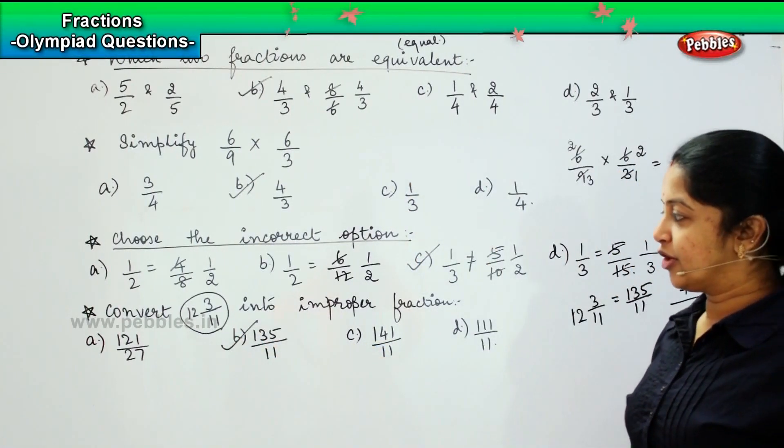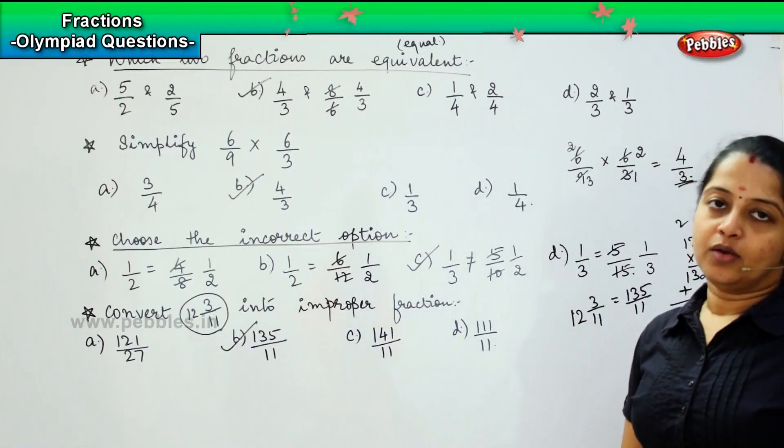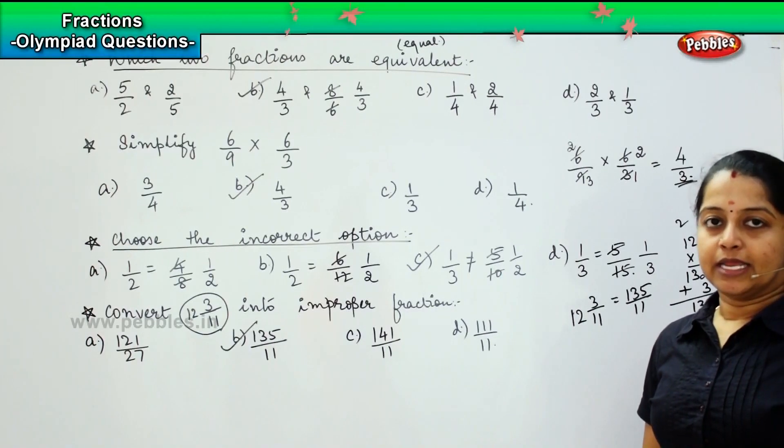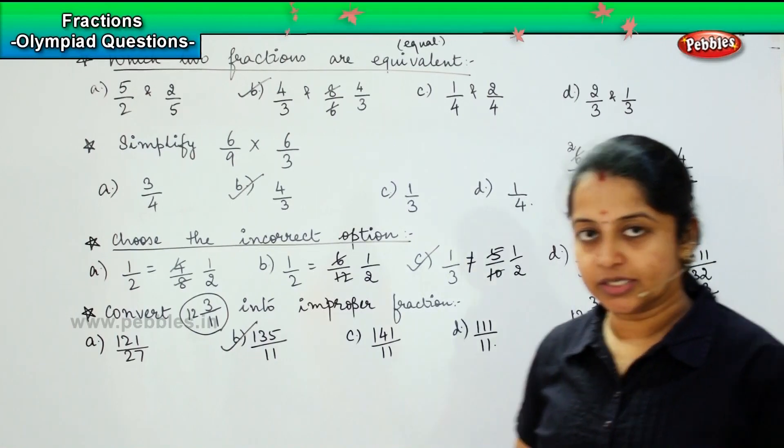How did you do? You multiplied this and whatever is the product, you added the remainder with that product to get the improper value. Shall we move to the next question?